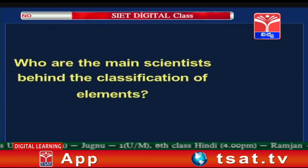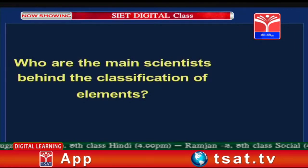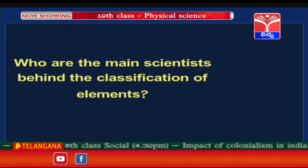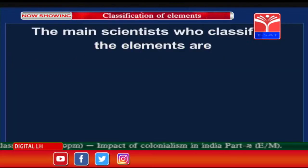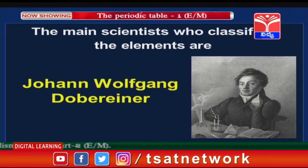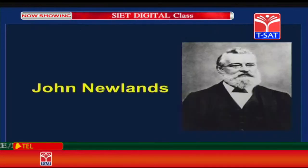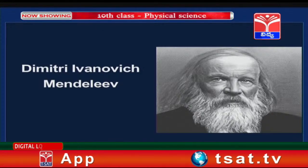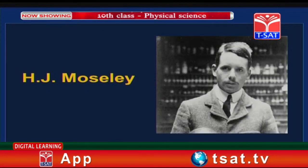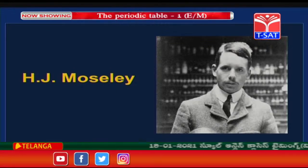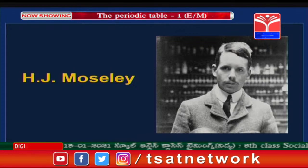Who are the main scientists behind the classification of elements? Let us recall their names. The main scientists who classified the elements are John Wolfgang Dobereiner, John Newlands, Dmitri Ivanovich Mendeleev, and H.J. Moseley. These are the four scientists who are behind the evolution of the periodic table.